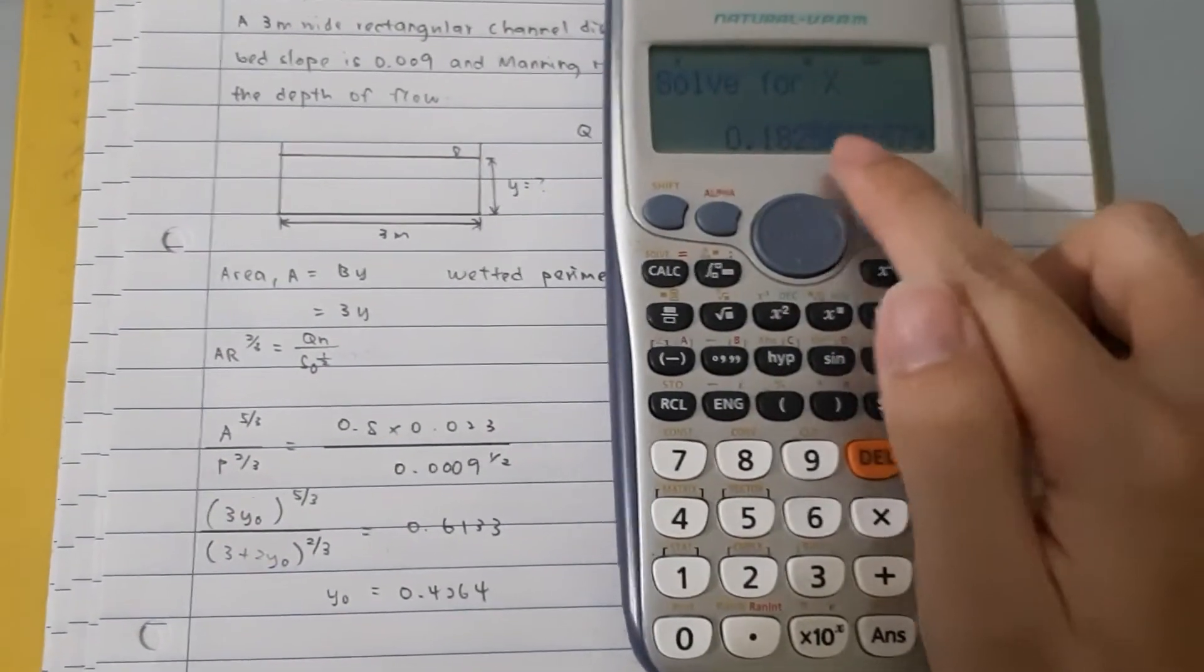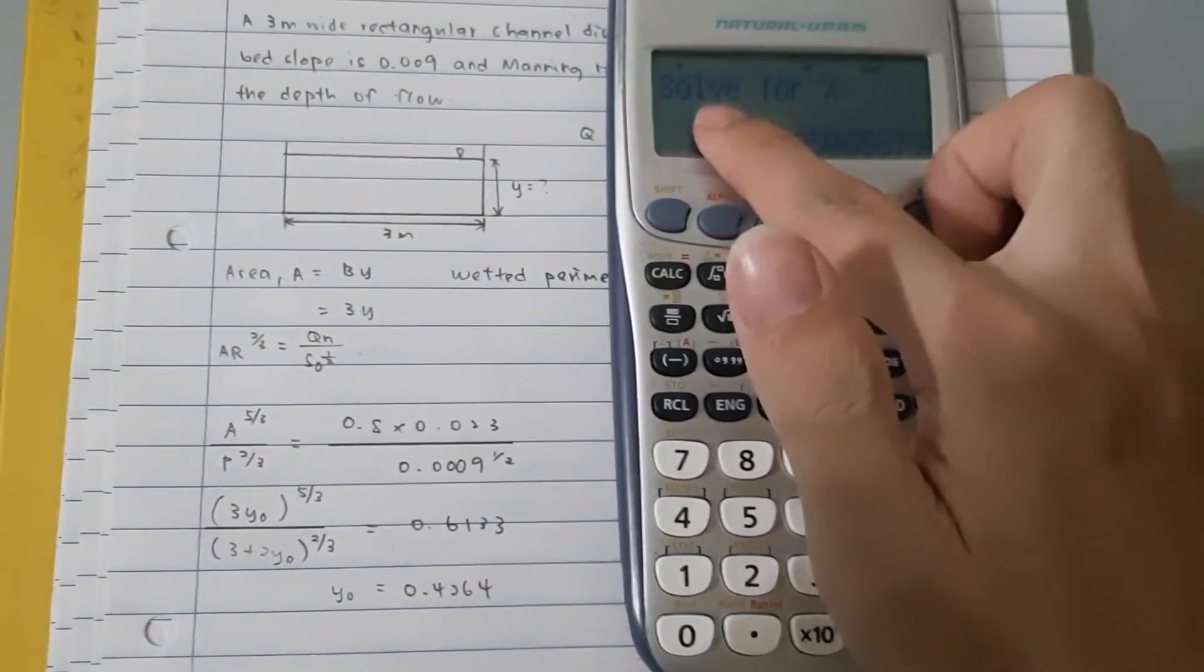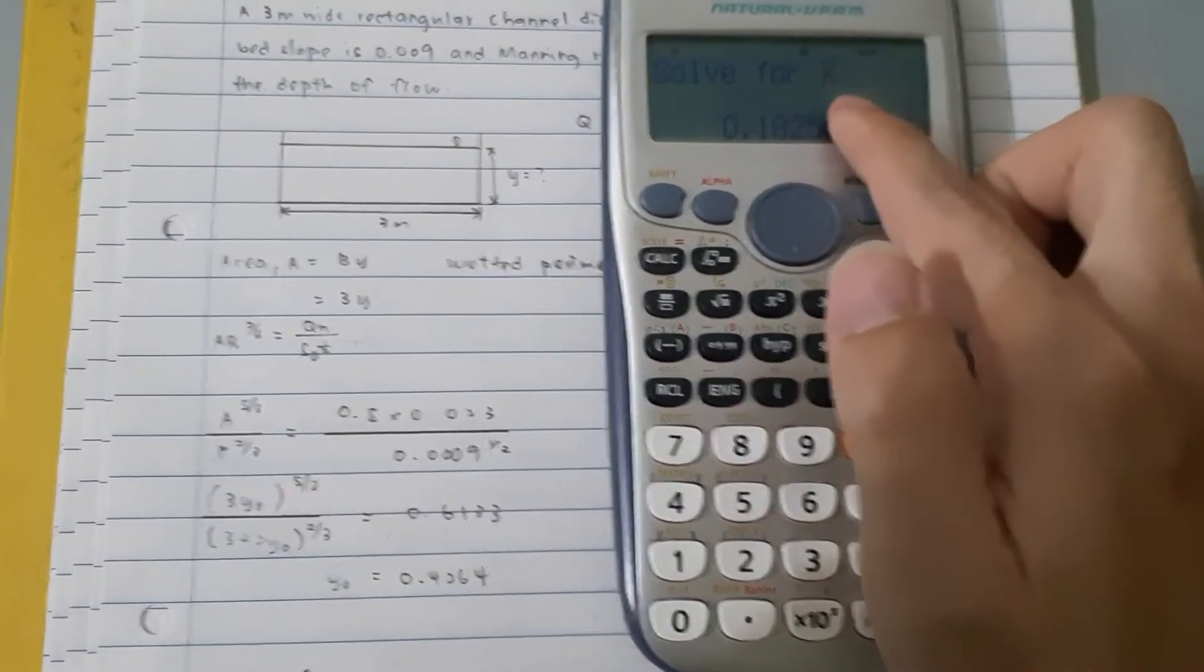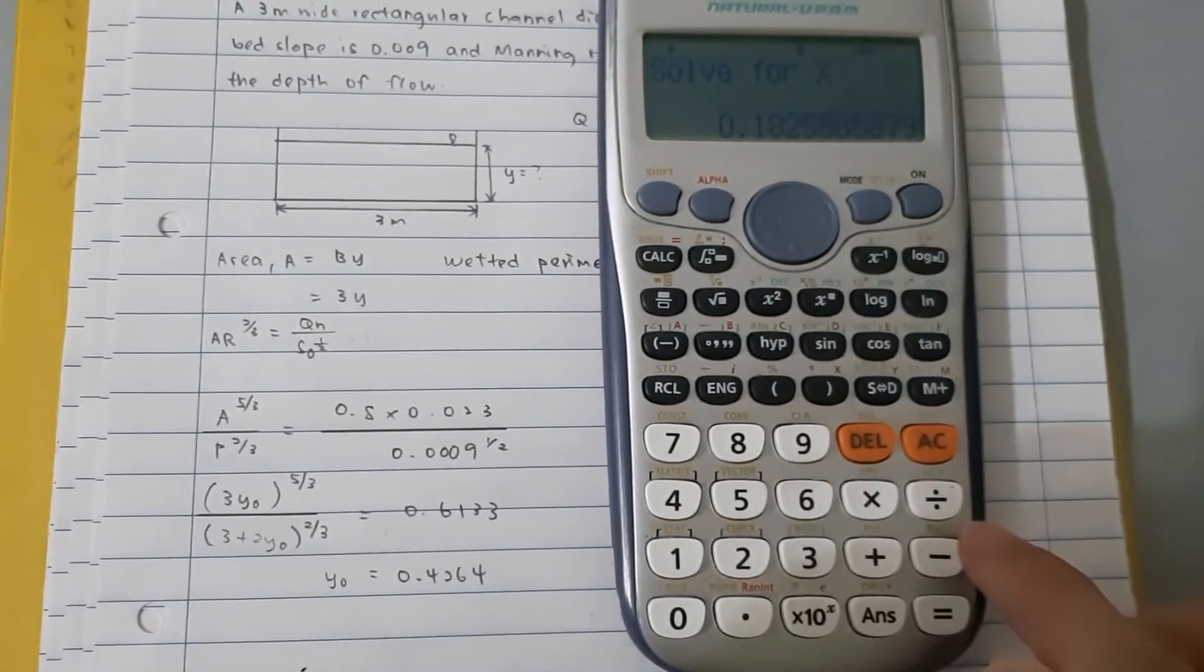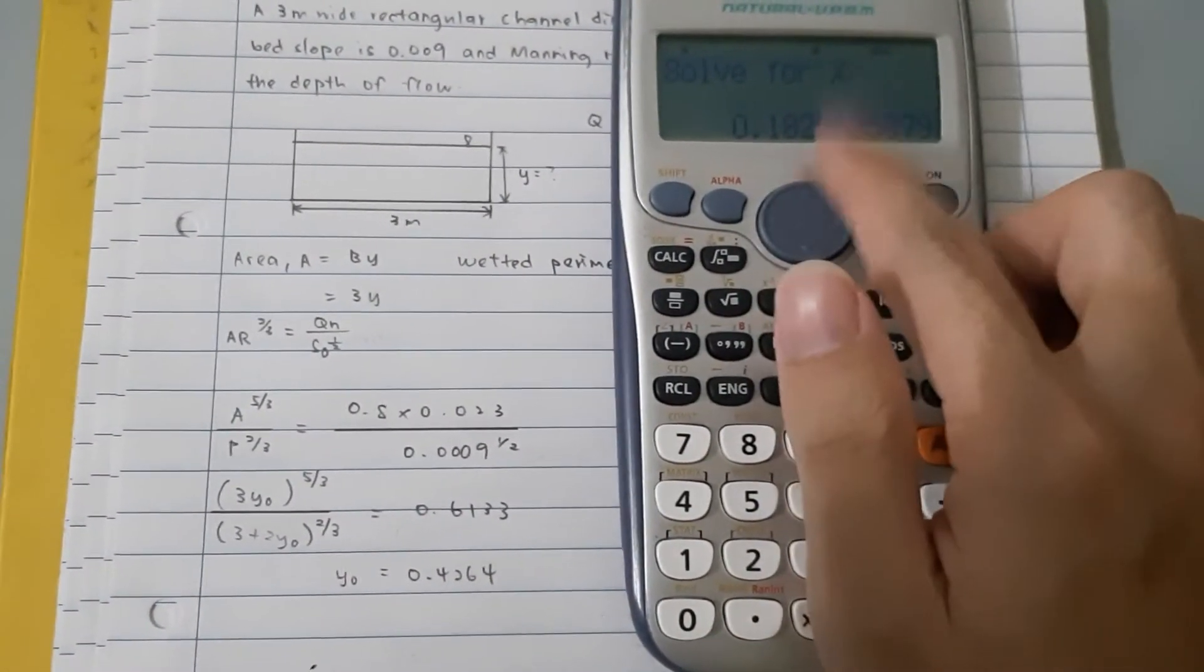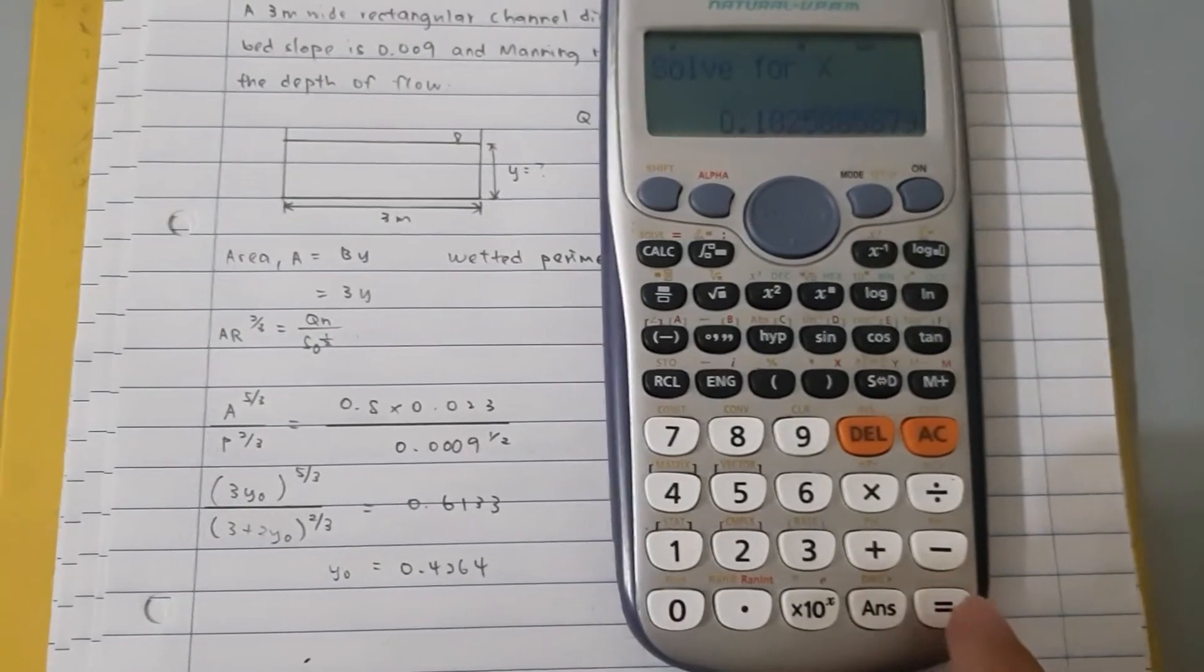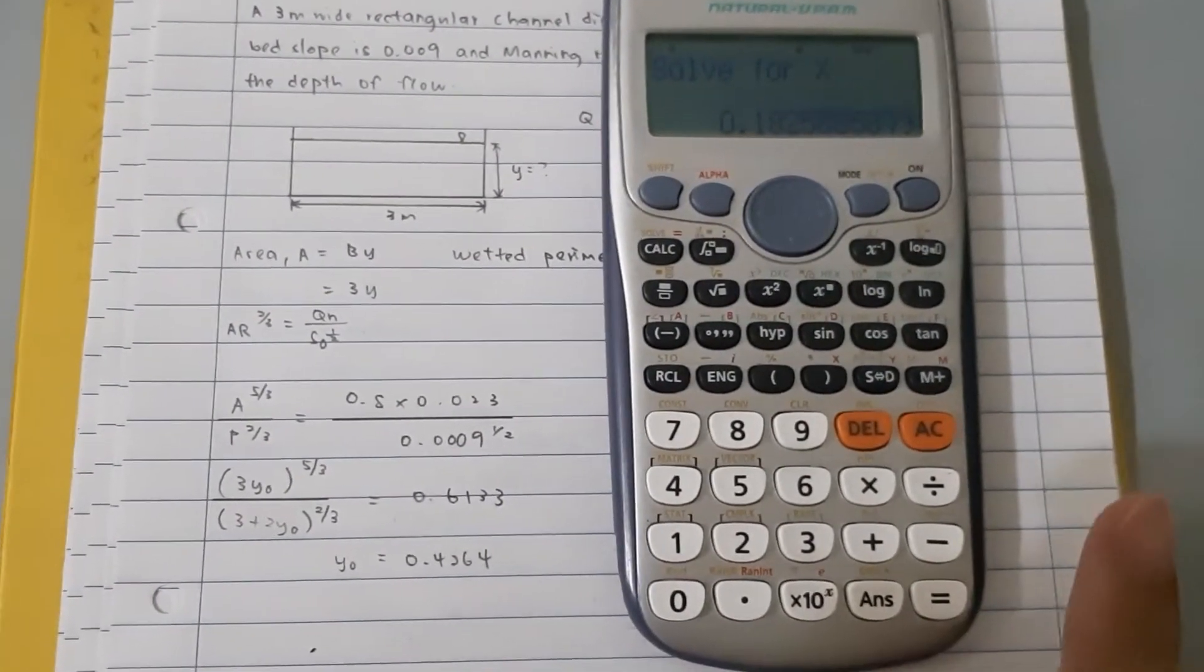So, at this stage, the calculator will show a number and solve for X. Actually, it means that the calculator is asking you whether you want to solve for X or not. And you just ignore these numbers. This number is not the answer. Remember, this number is not the answer. In order to get the answer, only now you can press the equal button here to get the answer.